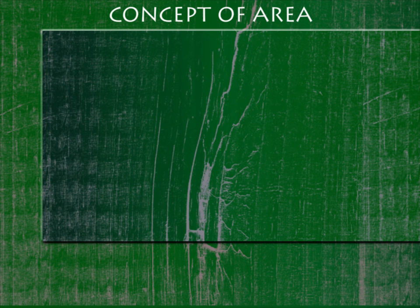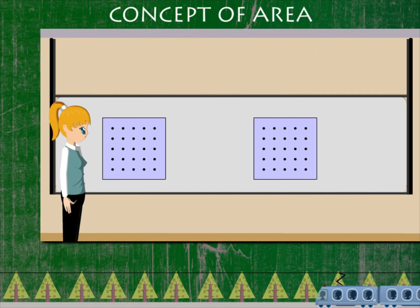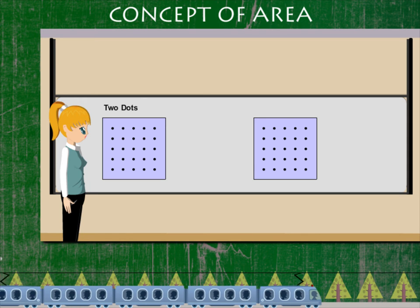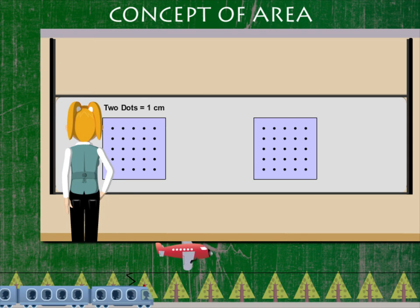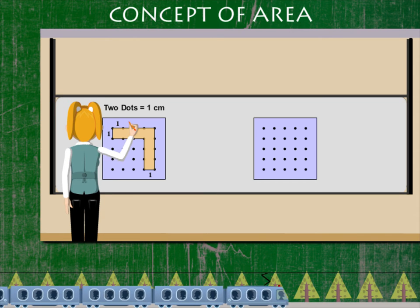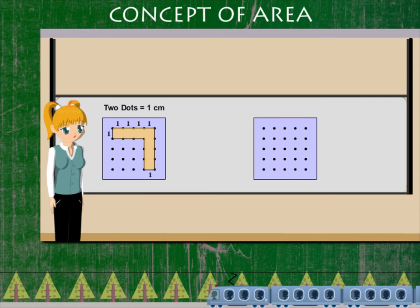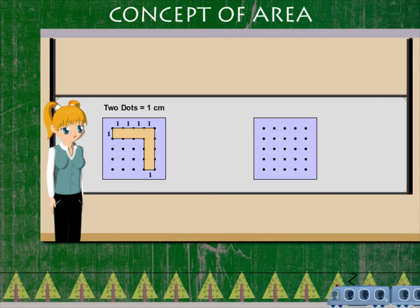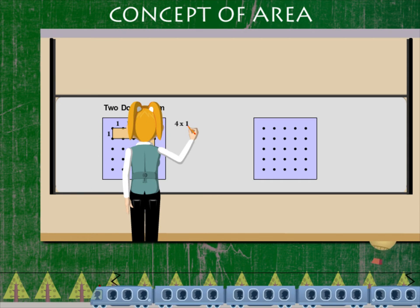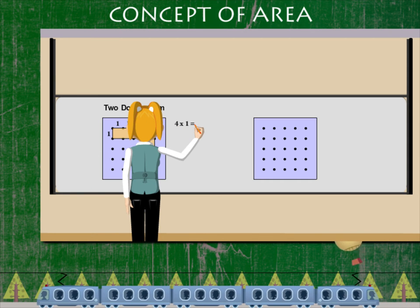Concept of area: Teacher Nancy has a graphical board where the length between two dots is one centimeter. She draws a figure and measures out the successive squares enclosed by the figure. So four centimeter length and one centimeter width